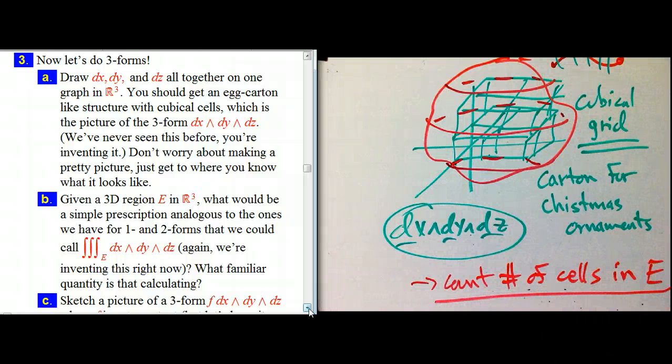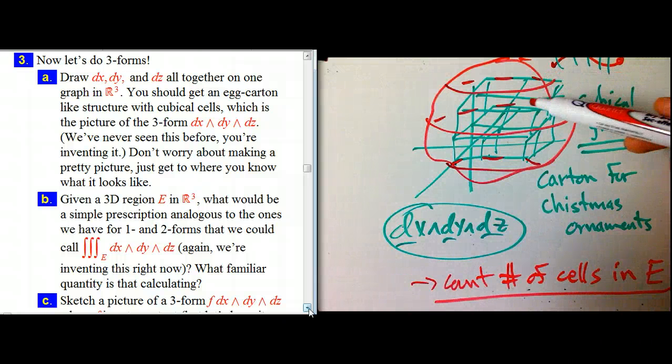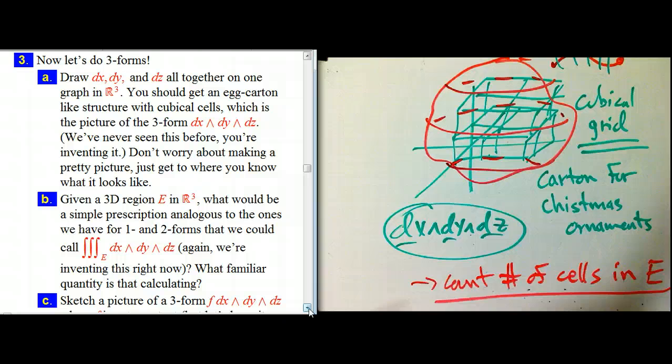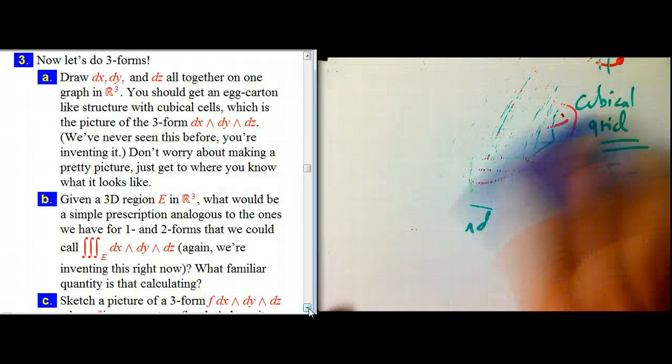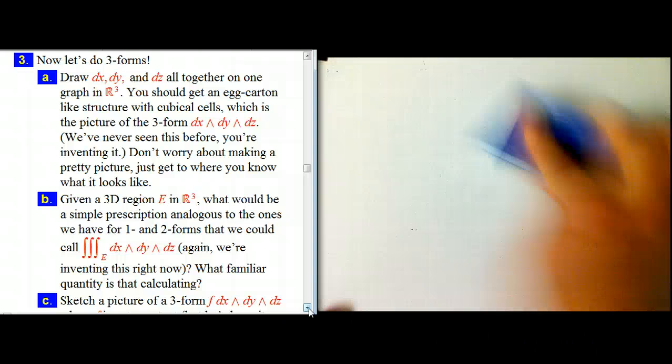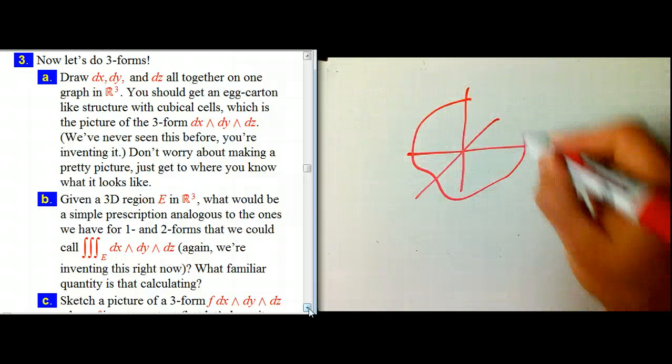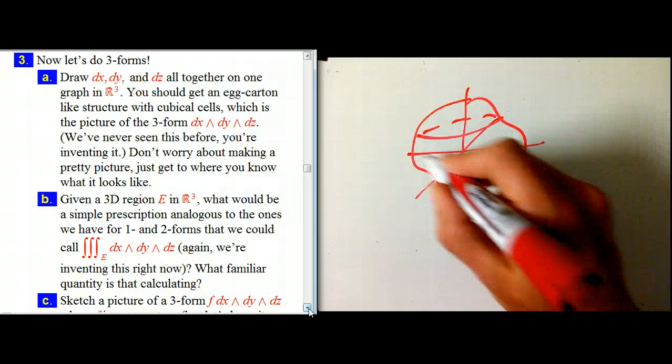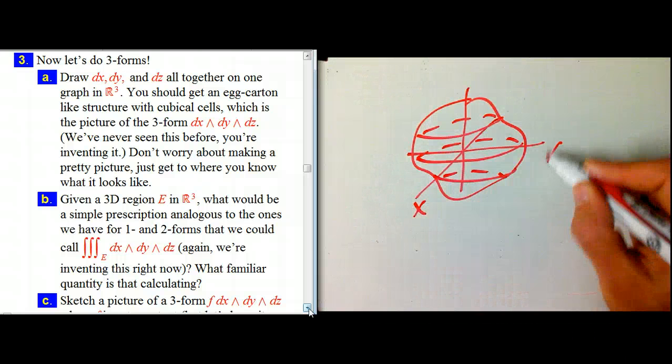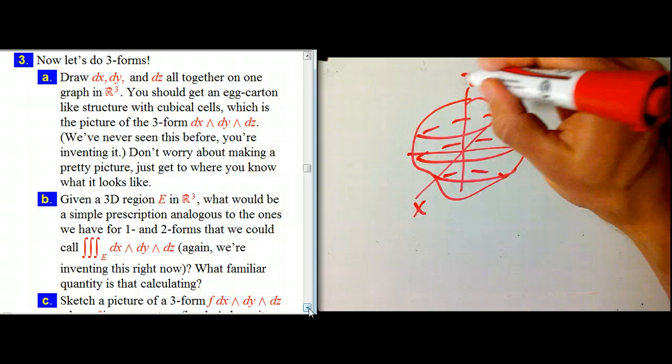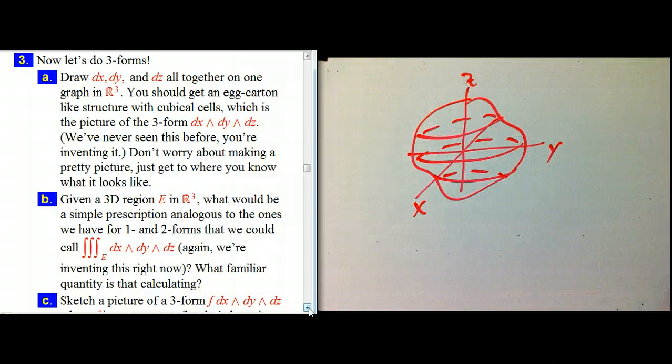Well, analogous, we had this idea of, for one forms, it was count the number of times it pierces through. For two forms, it was how many tubes of flux go through. Well, here, the analog is, again, it should be just counting. Count the number of little cells in this region E. And there's this beautiful thing about that, very similar to what I was talking about before. And that's that you can do it without any scale, any numbers, or any scale factor on this picture.